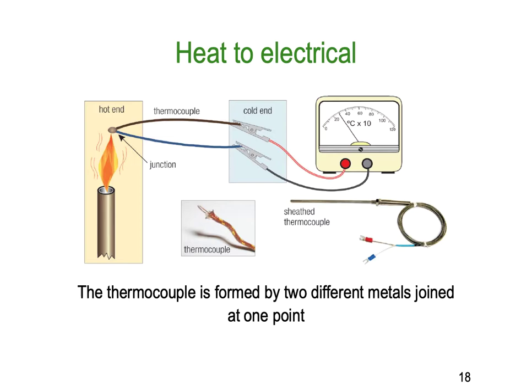Going directly from heat to electrical — an example of this is the thermocouple. But rather than being used as an energy source, it's more commonly used as a temperature sensor. A thermocouple is two dissimilar metals bonded together at a point, and as you heat that point, a potential difference is developed between the two dissimilar metals. The one on screen — brown and blue — is a type J thermocouple. Another common one is the type K thermocouple, which has a very large temperature range and is often used in high temperature furnaces to measure and manage temperature.